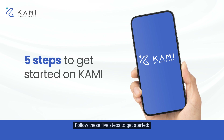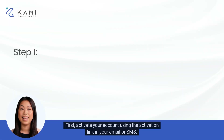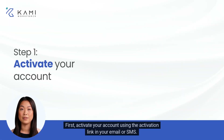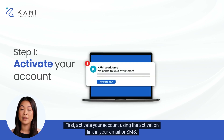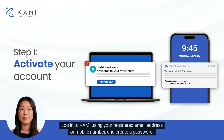Follow these five steps to get started. First, activate your account using the activation link in your email or SMS. Log into Kami using your registered email address or mobile number and create a password.